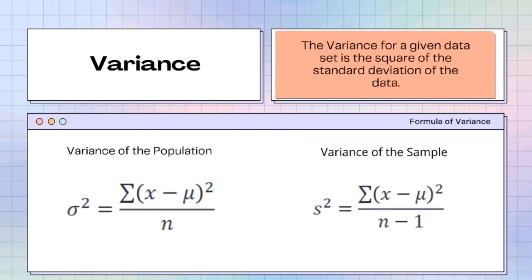The next one is the variance. The variance for a given data set is the square of the standard deviation of the data. To compute the variance of the population, the formula is: sigma squared equals the summation of (x minus mu) squared over n. To compute the variance of the sample, the formula is: s squared equals the summation of (x minus mu) squared over n minus 1.